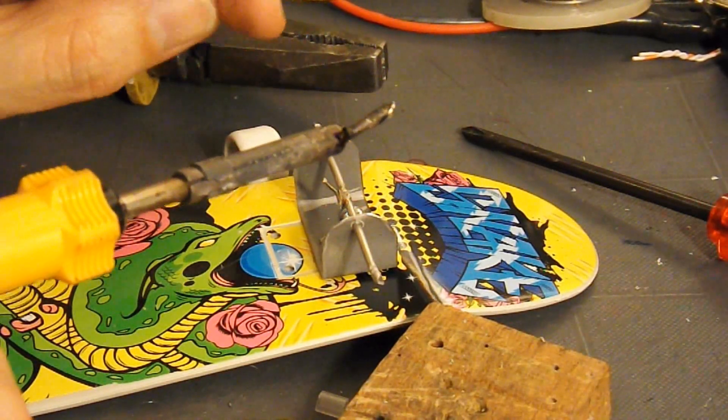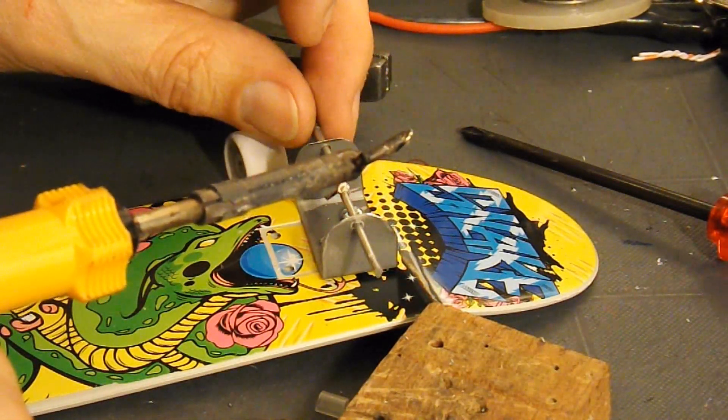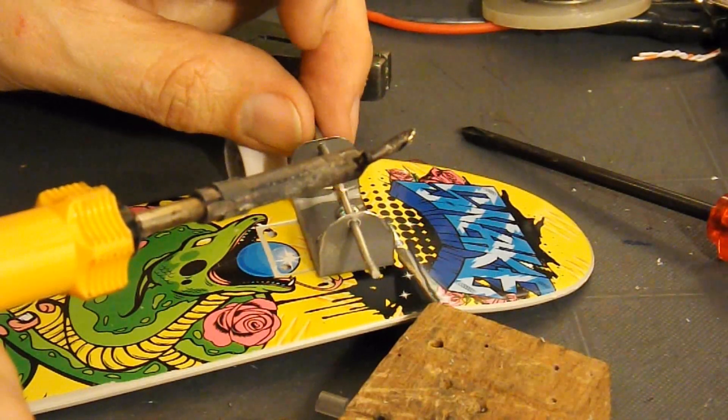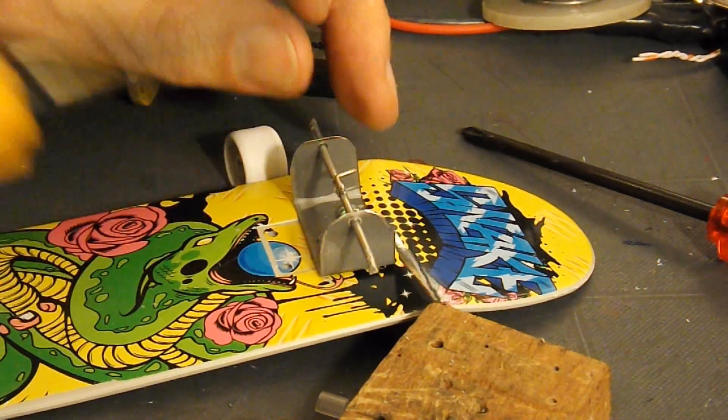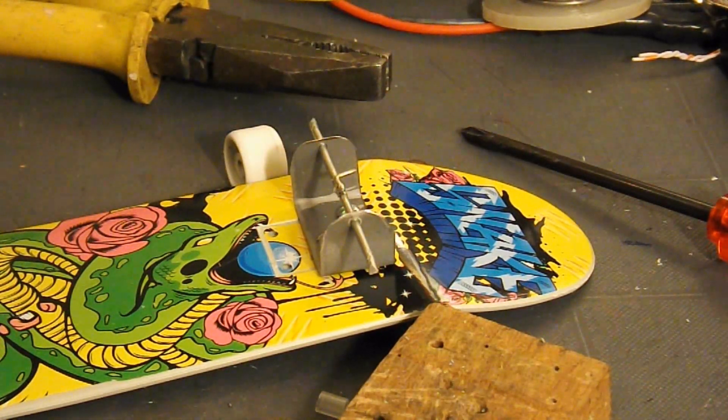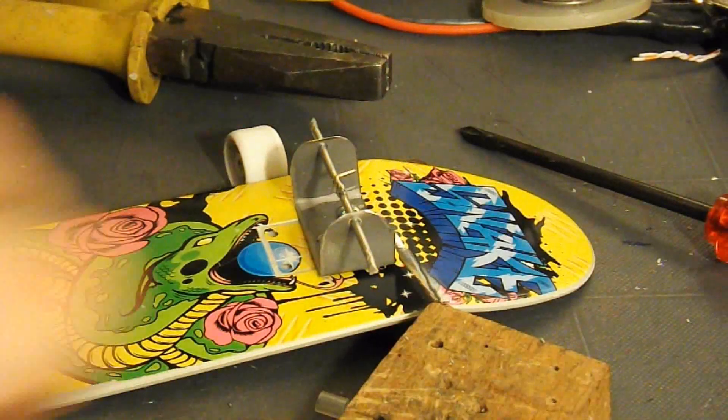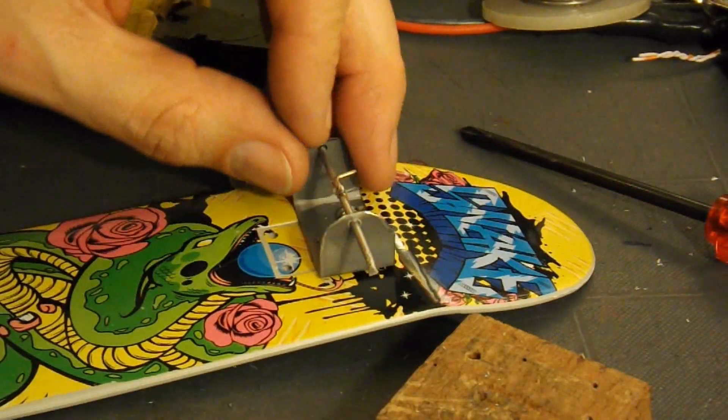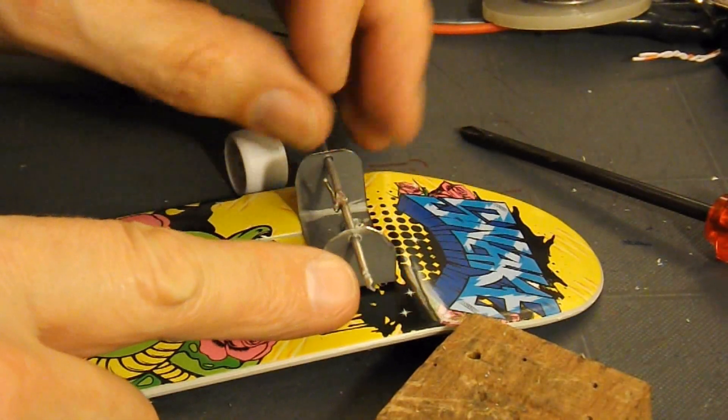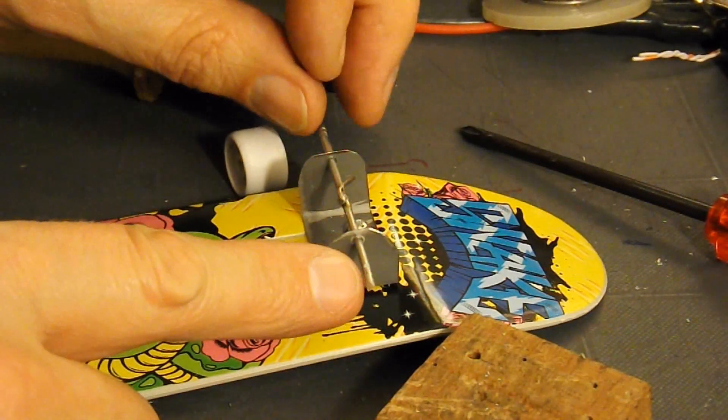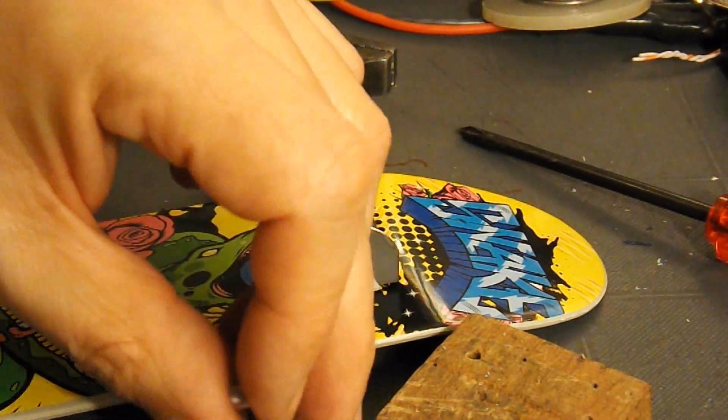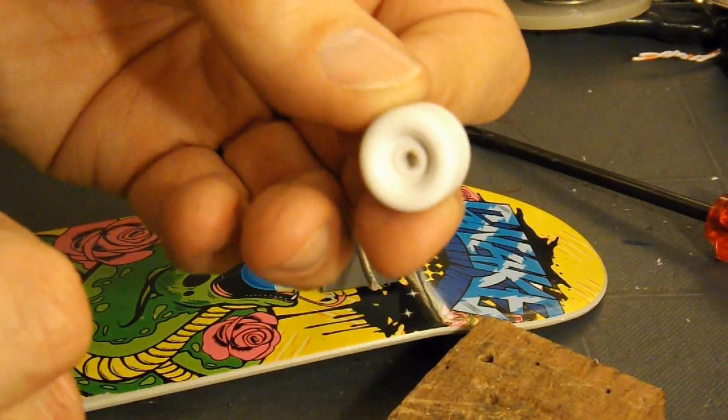That's so that we can hook the string on. I've also cut some notches into the end of the axle to grip the hot glue when we put it in the wheels.